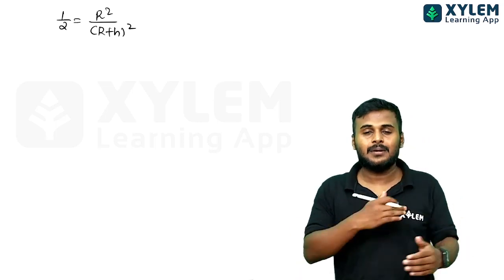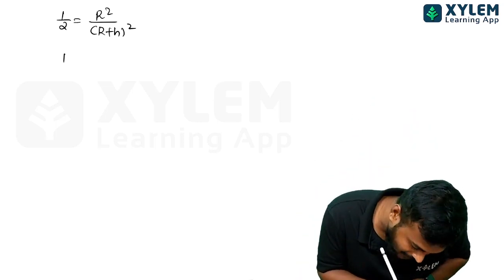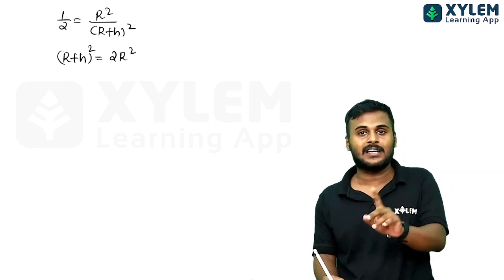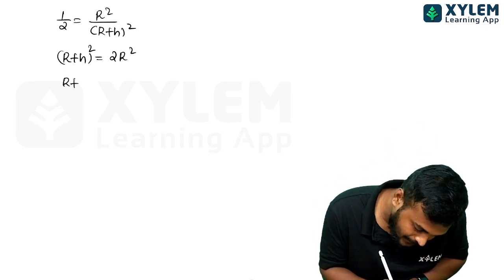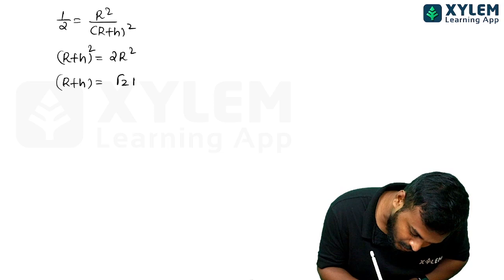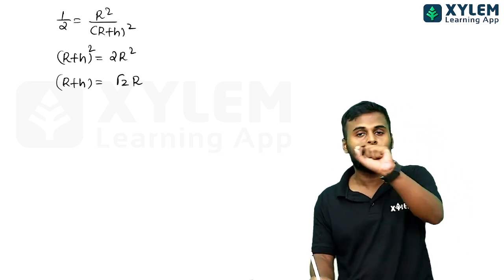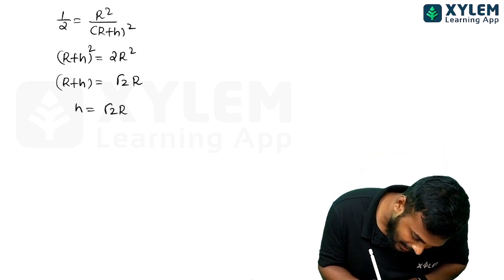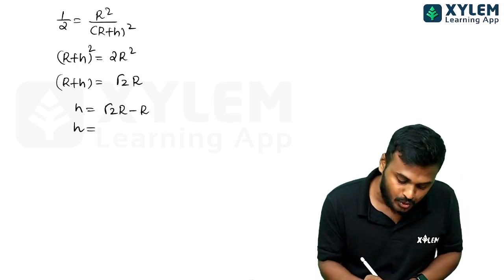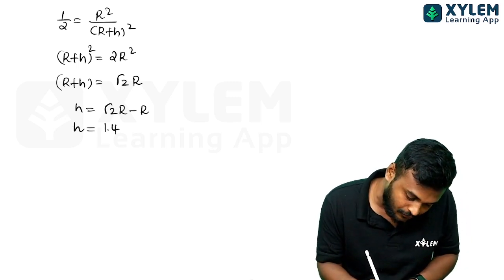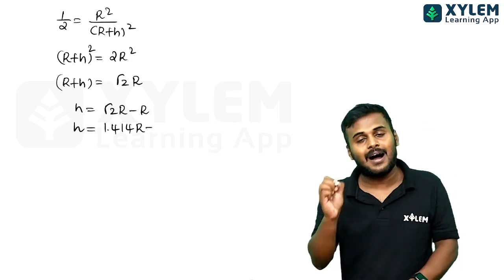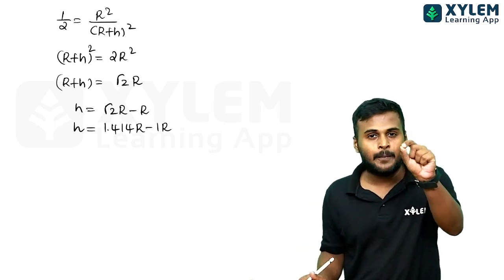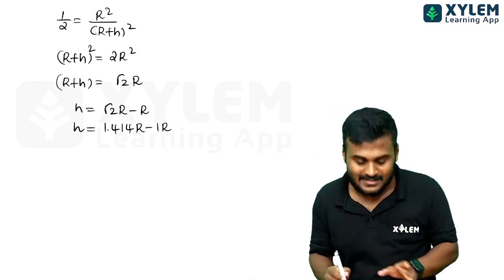Simplifying, 1 by 2 equals R square divided by R plus H whole square. Solving this gives R plus H equal to root 2 times R, so H equals 1.414R minus R, which means H equals 0.414R.